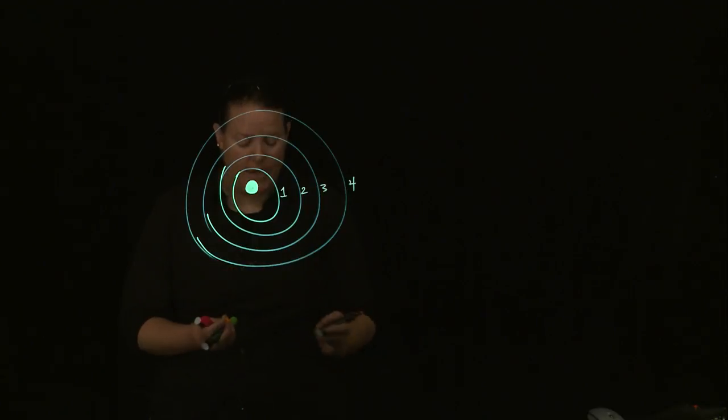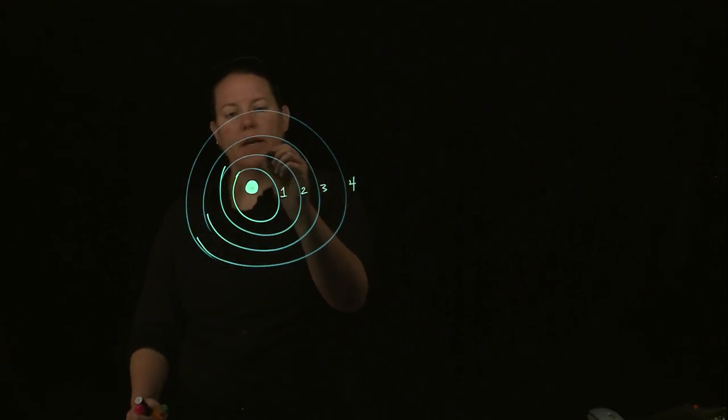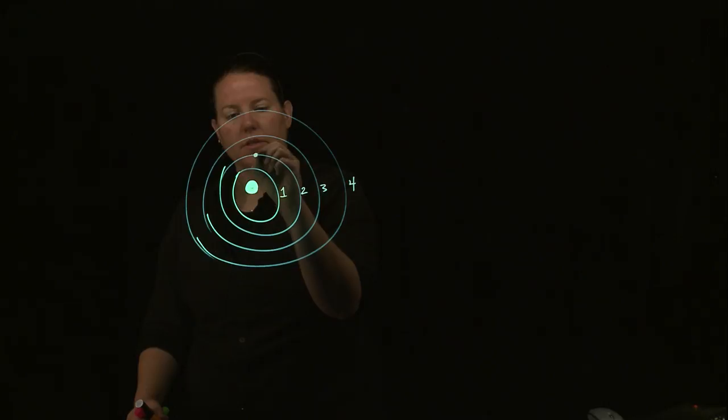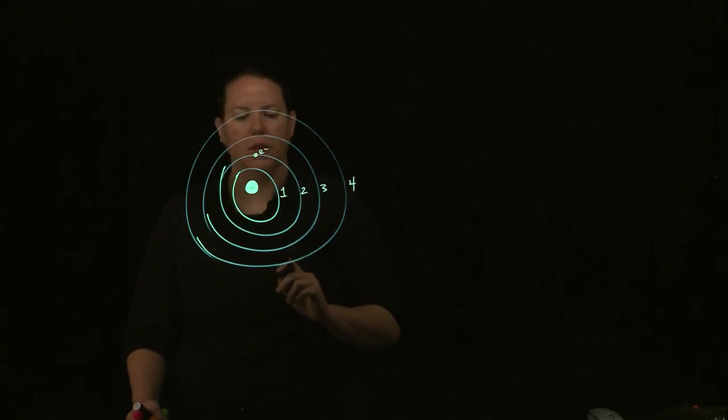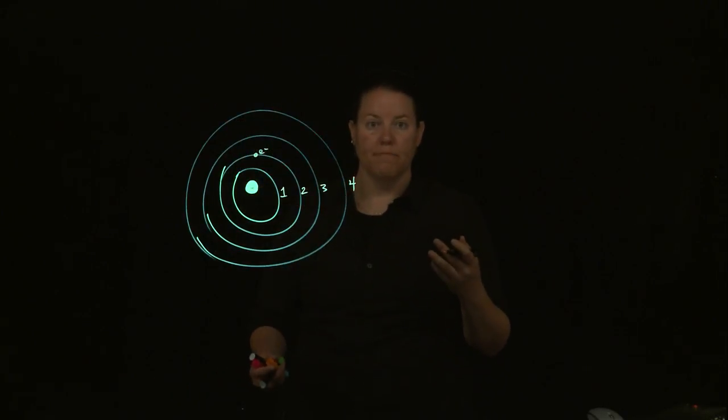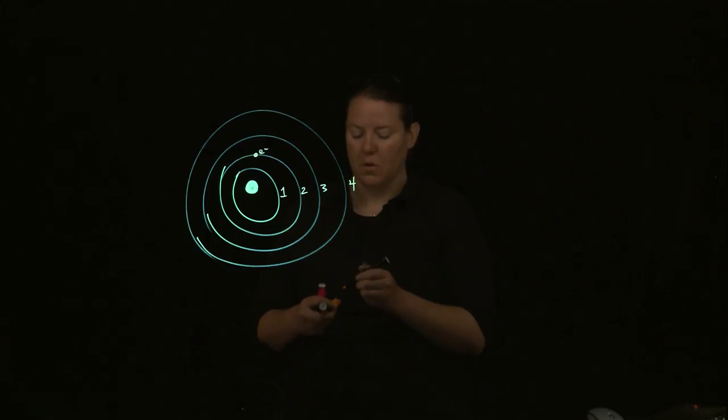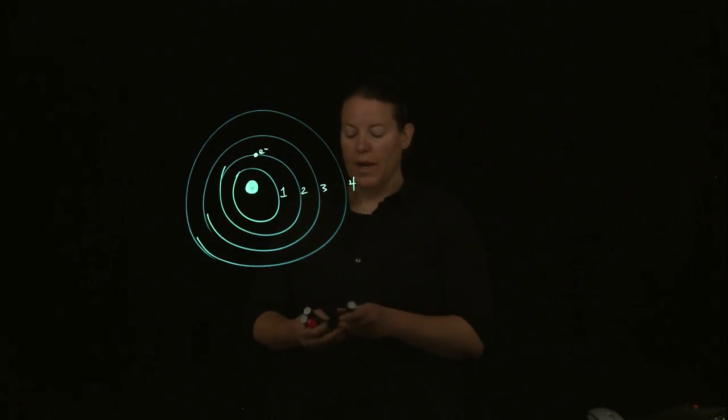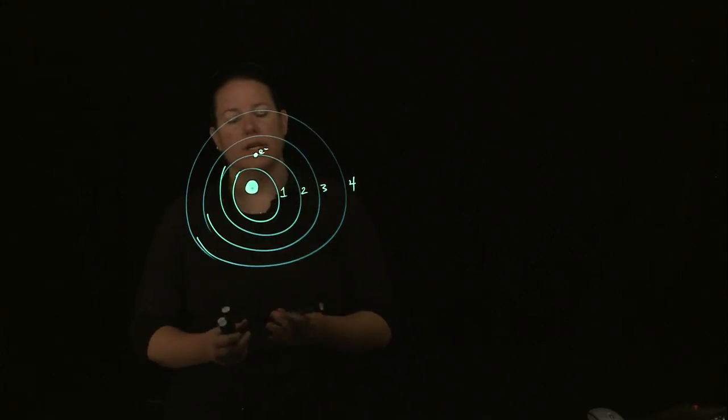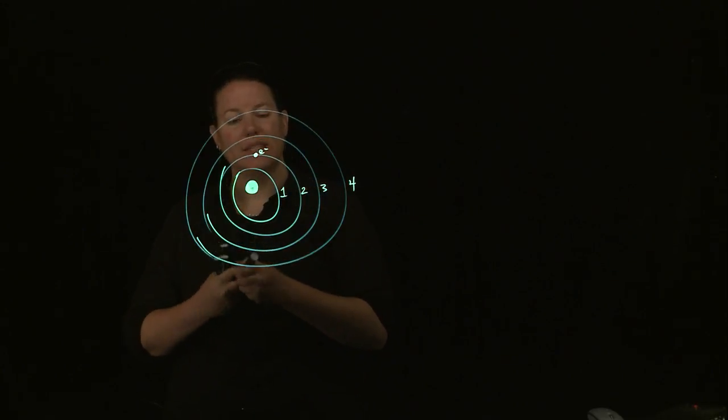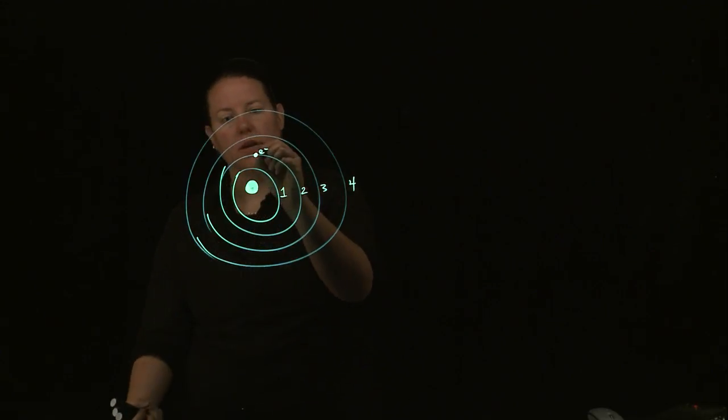Alright, so the idea here, while I'm throwing markers around, is that basically electrons exist at the lowest energy state they can. That's called the ground state. And that's true of the rest of the universe as well. The universe likes to exist at the lowest energy state it can. So what happens is that sometimes electrons get excited.